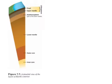The Earth is layered from the coldest layer to the hottest layer. The layers are the crust, upper mantle, asthenosphere, lower mantle, outer core, and inner core. The approximate distance from the crust to the inner core is about 6,400 kilometers.